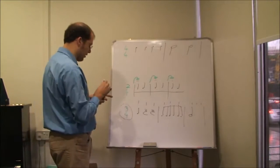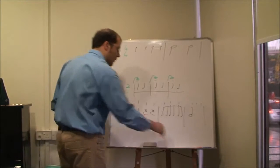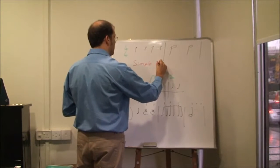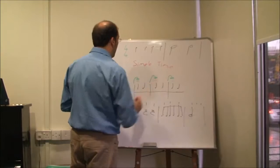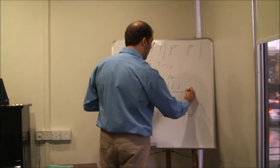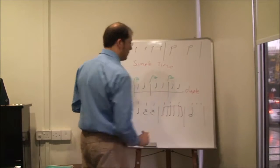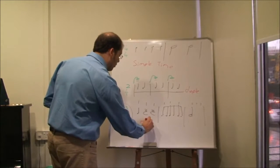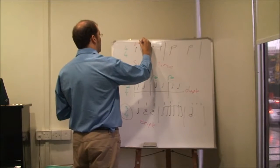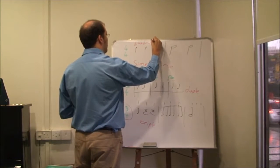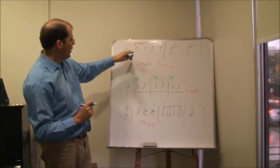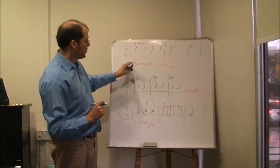So these basic time signatures are called simple time. And for each one of them there's a specific name: two is called duple, three is called triple, and four is called quadruple. So duple time, triple time, quadruple time — and each one is simple. So we have simple duple, simple triple, and simple quadruple.